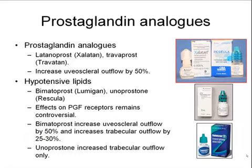We're first going to go over the prostaglandins. The prostaglandin analogs consist of Xalatan and Travatan, and these increase uveal scleral outflow typically by about 50% by causing adjustment in the ciliary body phase.